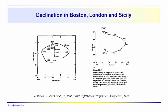Over here we have a similar diagram for the variations in the declination — that's the angle that the magnetic field makes with geographic north when you're holding a compass at that location. We can see that in 1600 it was to the east, in 1800 over to the west, and then kind of back — a little bit less westerly in 1955. And Boston, 1723 to 1960. We'll take a closer look at that next time.